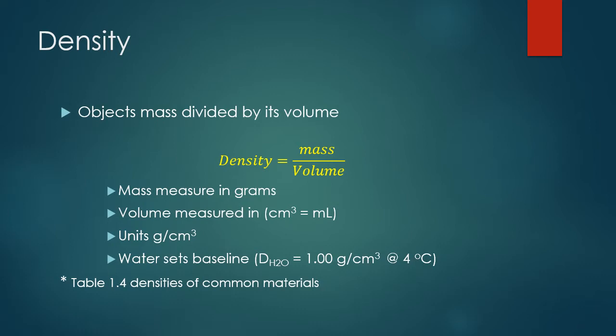Density can be reported in a variety of units. In this course, 90% of the time we're going to see mass measured in grams. Volume will be measured in either centimeters cubed or milliliters. We often use centimeters cubed when talking about a solid object — for example, the density of aluminum metal, a solid, where volume would be measured in centimeters cubed using a ruler.